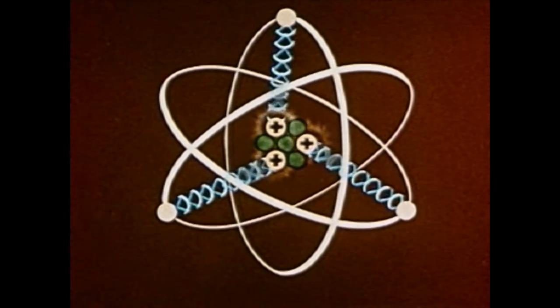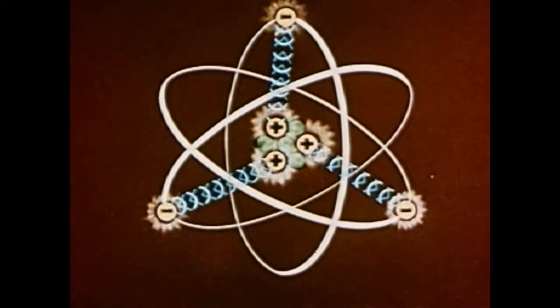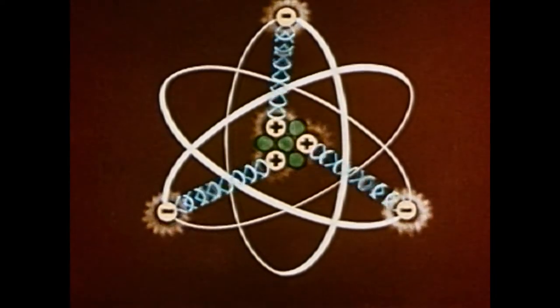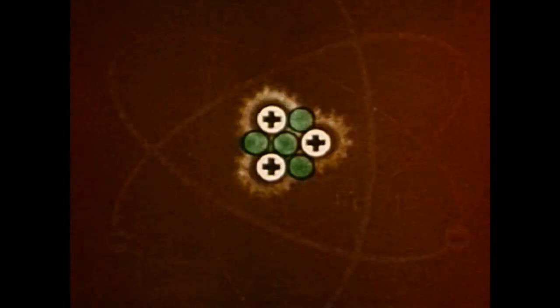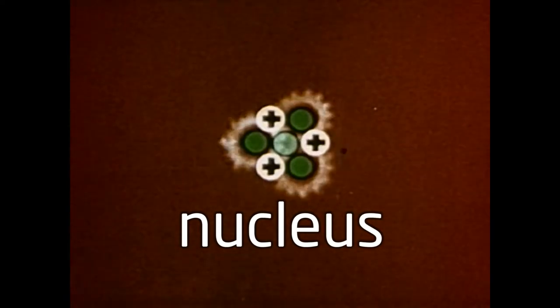Since every atom is electrically neutral, the number of protons in the nucleus must equal the number of electrons far away in the electron cloud. The protons and neutrons together make up the nucleus of the atom.